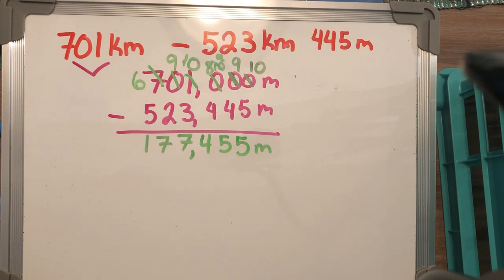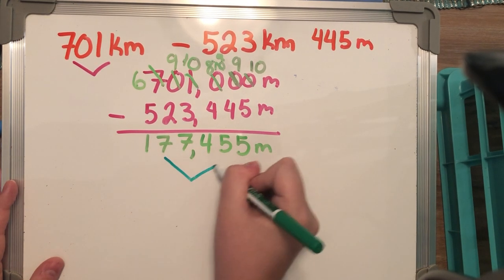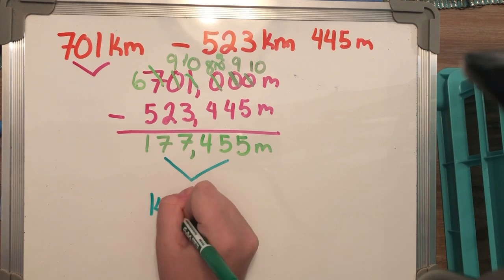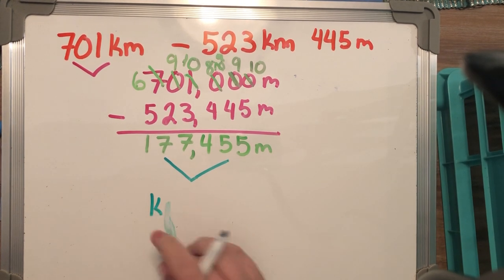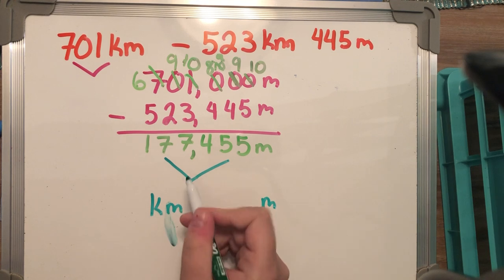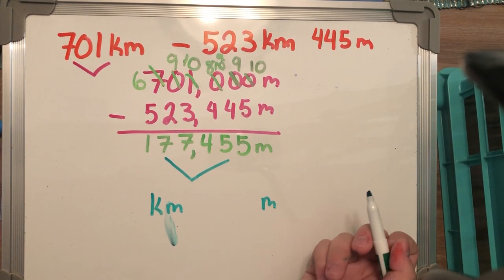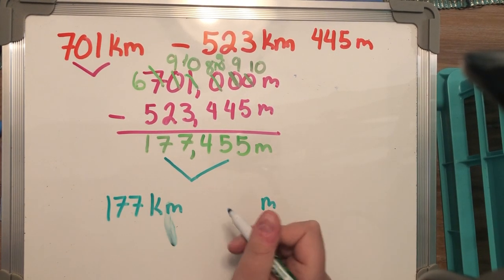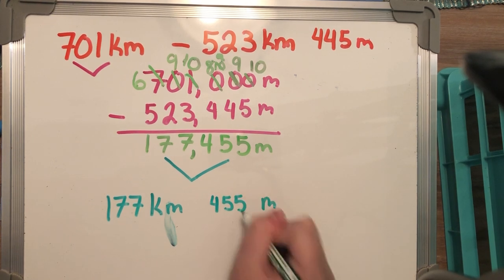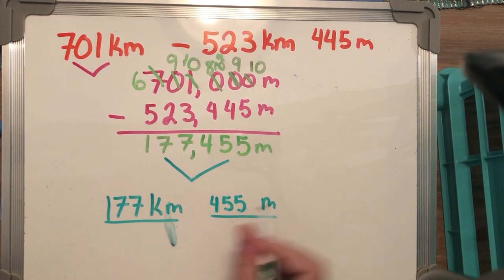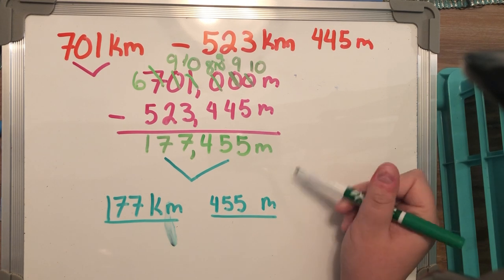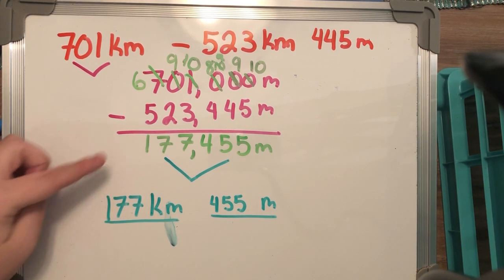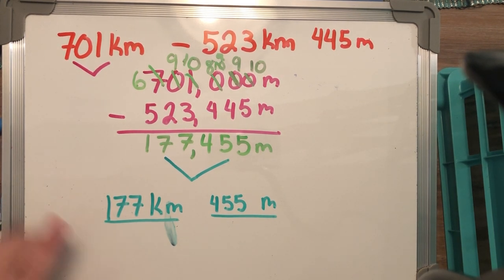Now if you get a problem that says break it into its smaller units, that means we take 177,455 meters and convert it back into kilometers and meters. Since 1KM is worth 1,000 meters, 177,000 meters is really 177KM and 455M. Both forms are acceptable — just pay attention to what the question is asking. If it says solve, give the answer in meters. If it says break into smaller units, give kilometers and meters.